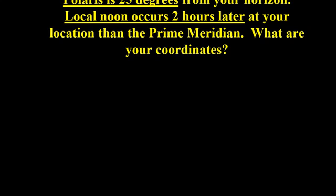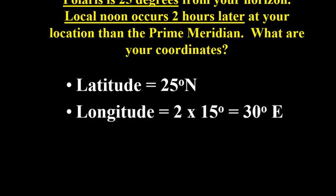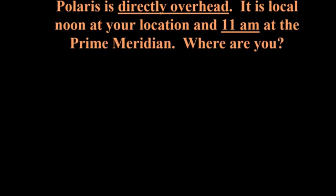We need to find two coordinates. Because the altitude of Polaris equals your line of latitude, we know we are located at 25 degrees north. For the line of longitude, the time difference is two hours, and it says local noon is later than at the prime meridian. We multiply two hours by 15 degrees to get 30 degrees. Since it's later, West Early East Later tells us we are east. Therefore our line of longitude is 30 degrees east.